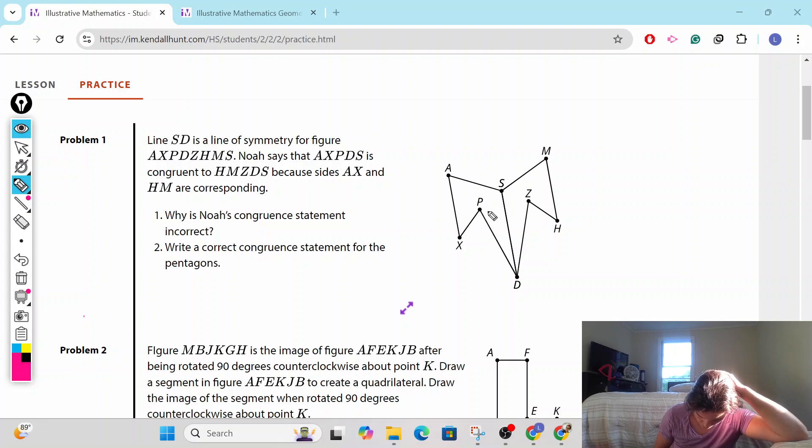That's not a pentagon. That has one, two, three, four, five, six, seven, eight sides. That's an octagon. And then Noah says A, X, P, D. So we went this way, this way, D, S, P, D, S. So that's the whole thing, and we assume the last one is congruent to H, M, Z, D, S.